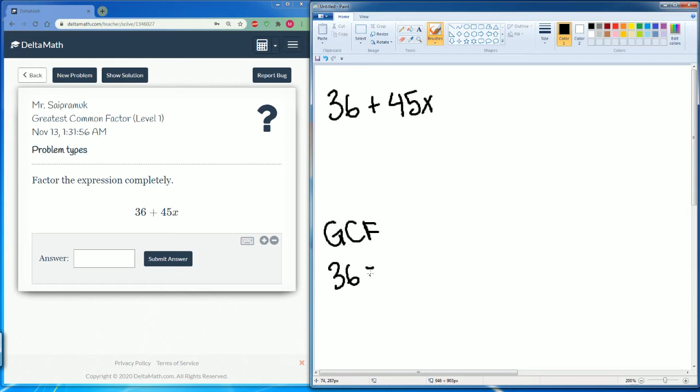So 36 can be broken down... let me think, 2 times 2 times 2 times 2, which is 16 times 2 is 32, no. We want to make 36, so you know what, I'm going to clean this up.